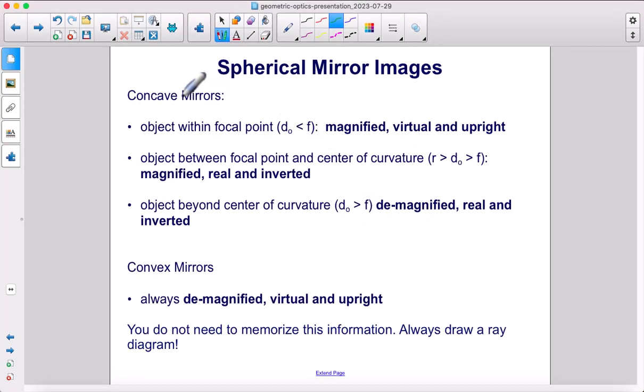In summary, for concave mirrors, if the object is between the mirror and the focal point, that image will be magnified, virtual, and upright. If the object is between the focal point and the center of curvature, the image will be magnified, real, and inverted. If the object is beyond the center of curvature, the image will be demagnified, real, and inverted.